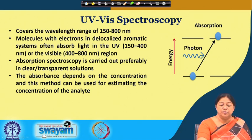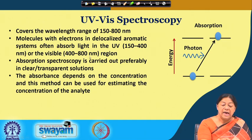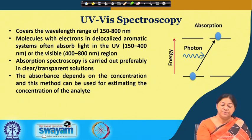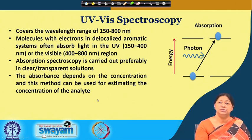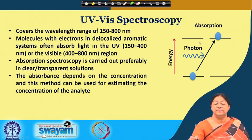UV visible spectroscopy covers the wavelength range of 150 to 800 nanometers. Molecules with electrons in delocalized aromatic systems absorb light in the UV region. This absorption spectroscopy is preferably carried out in a clear or transparent solution. The absorbance depends upon the concentration, and this method can be used to determine the concentration of the analyte. In a simplified view, we have a specific electron in a substance that is excited up to a higher energy level — we have a ground level and an excited level, and we have photon absorption.